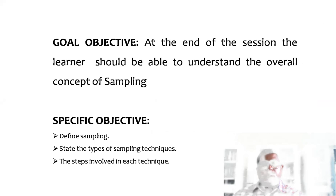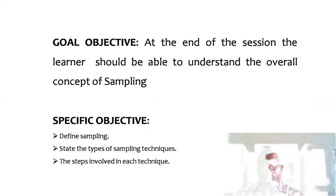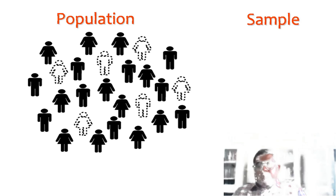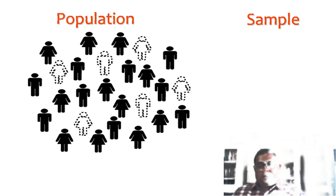At the end of the presentation you will clearly know what is sampling, the different types of sampling techniques, and the steps involved in each technique. Sampling is the process or technique of selecting a sample of appropriate characteristics and adequate size. The sample is a part of the population called the universe, reference, or parent population.